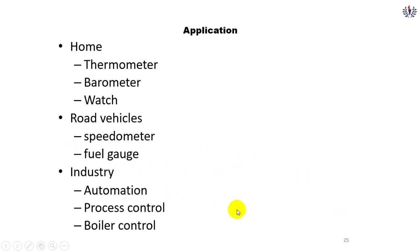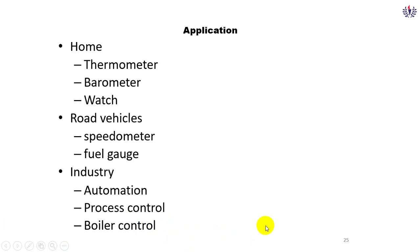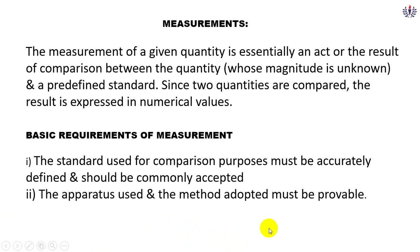In the field of automation — process automation or product automation — measurement of various parameters is required. For a boiler in a thermal power plant, for example, there are three states of steam: wet steam, dry steam, and superheated steam. These temperatures are measured using boiler control instruments such as a thermometer.